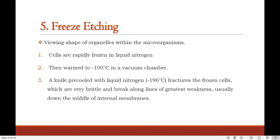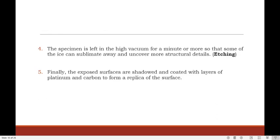The last technique is freeze etching, used for viewing the shape of organelles within microorganisms. The cells are rapidly frozen in liquid nitrogen at minus 196 degrees Celsius, then warmed to minus 100 degrees Celsius in a vacuum chamber. A knife pre-cooled with liquid nitrogen fractures the frozen cells, which are very brittle and break along the lines of greatest weakness, usually down the middle of the internal membrane. The specimen is left in high vacuum for a minute or more so that some ice can sublimate away and uncover more structural detail — this step is called etching. Finally, the exposed surfaces are shadowed and coated with layers of platinum and carbon to form a replica of the surface.